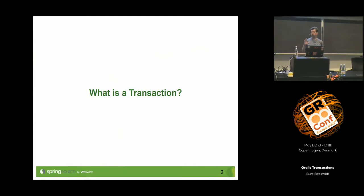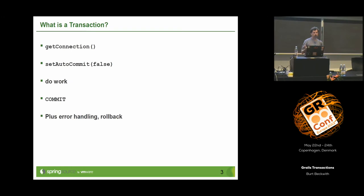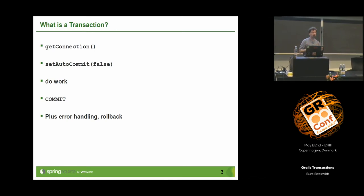As an application developer — a Java/Groovy JVM developer using JDBC with some wrappers around it — a transaction is basically: you get a connection, you set autocommit to false (the default is true), so every statement you make goes right to the database. That way you can do multiple things, and if something goes wrong you can either choose not to commit or explicitly roll it back. Assuming everything goes well, you commit. Get a connection, don't autocommit anything, push it when you're ready.